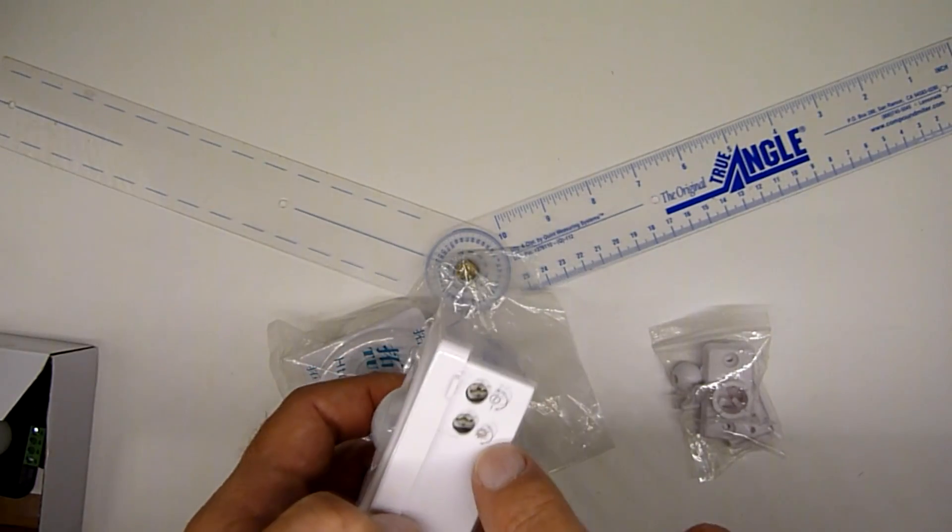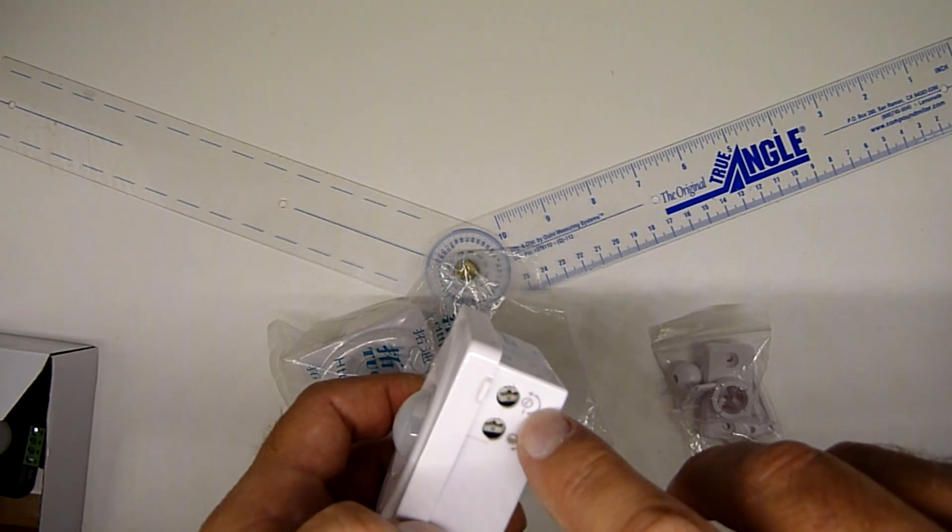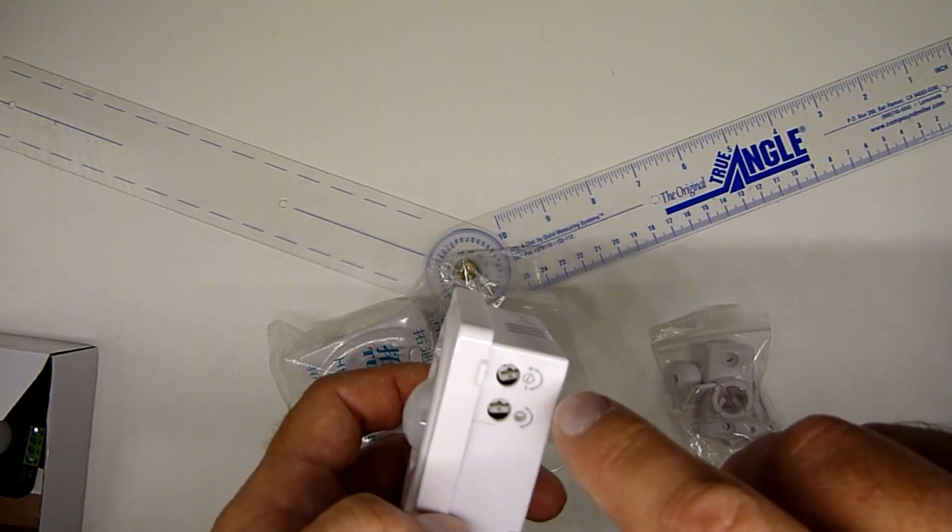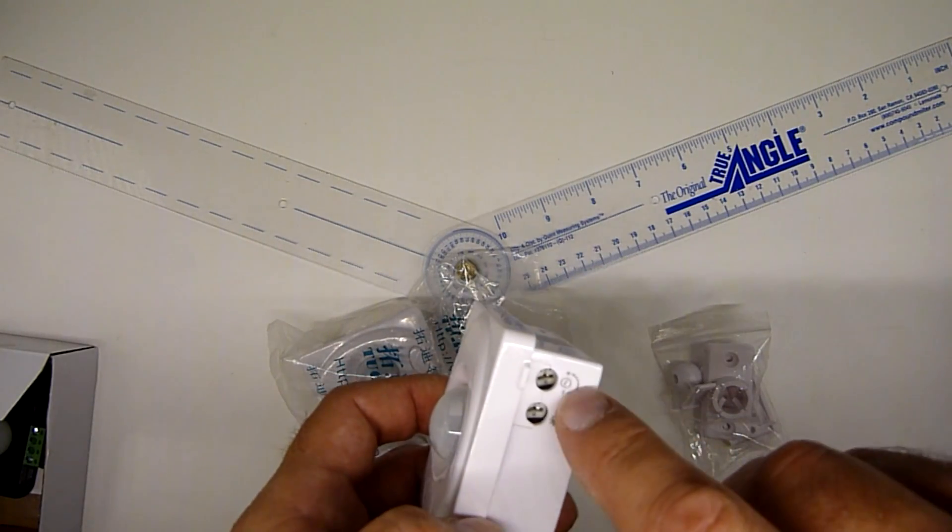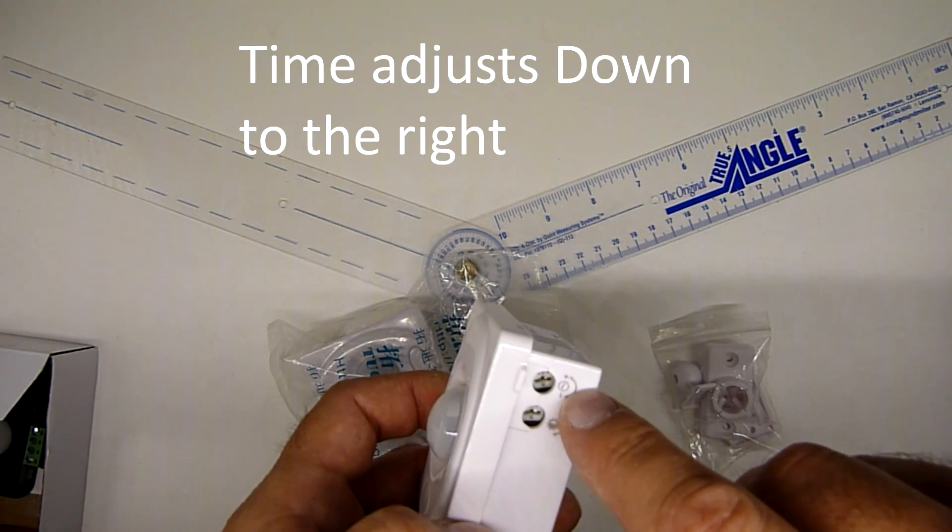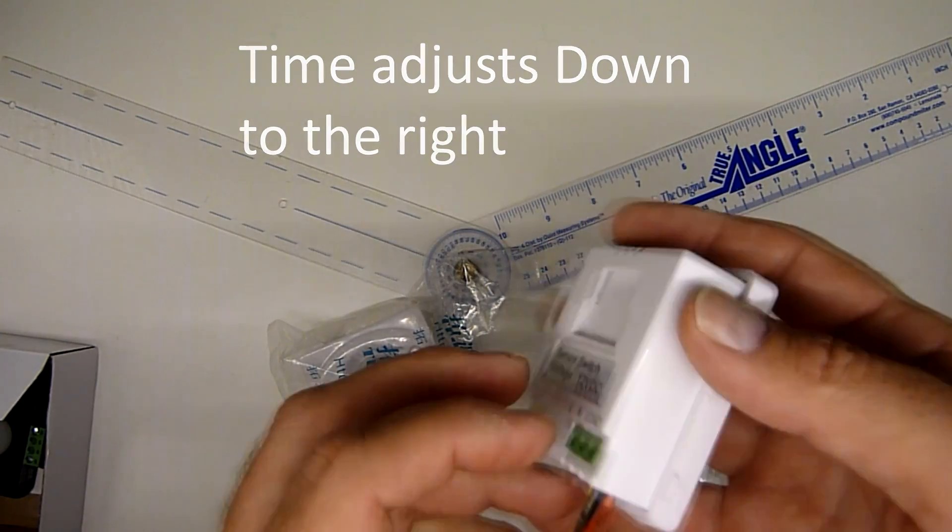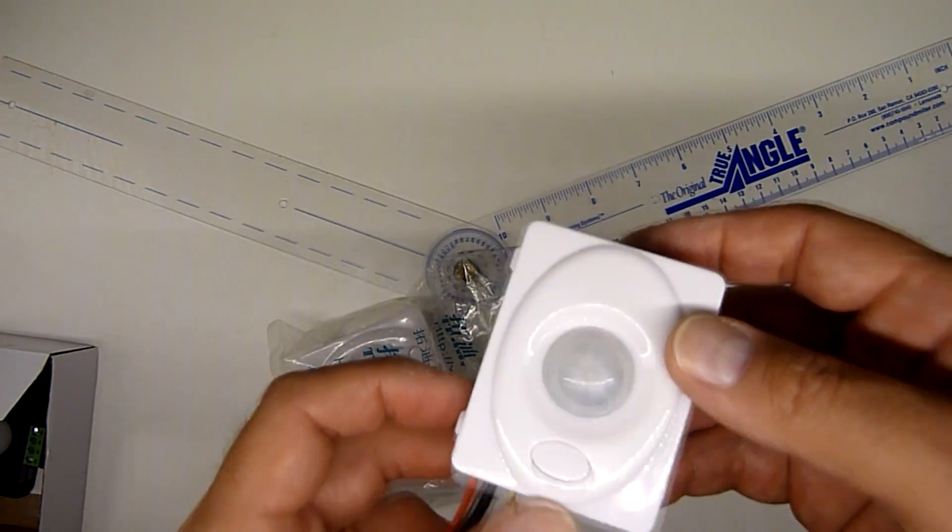One thing to note about this unit is the adjustment for the time. That's actually backwards in terms of to the left is up and to the right is down. Other than that, it's very easy to use, and as I said, it has the audible click.